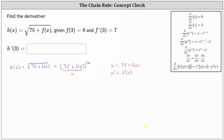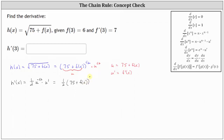Because we can think of h of x as u to the 1/2, h prime of x is equal to 1/2 times u to the power of 1/2 minus 1, which is negative 1/2, times u prime. In terms of x, this is 1/2 times the quantity 75 plus f of x raised to the power of negative 1/2, times f prime of x.